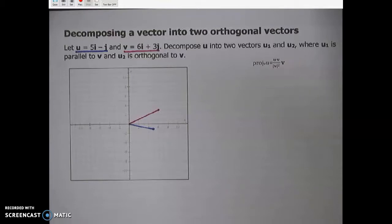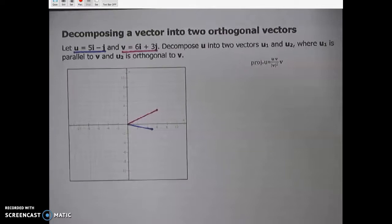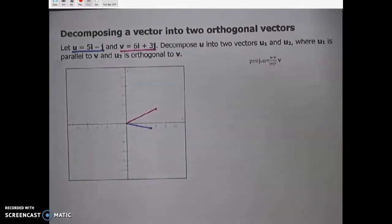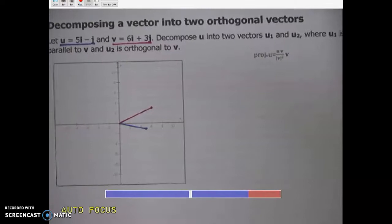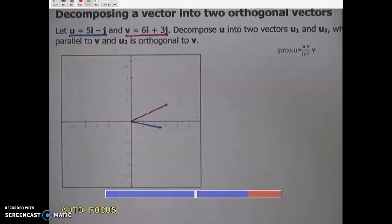So they give us vector u and vector v, and they ask us to decompose u into two vectors where u sub 1 is parallel to v, and u sub 2 is orthogonal to v, or perpendicular. So by decompose they just mean break apart, so let's not let the wording freak us out.